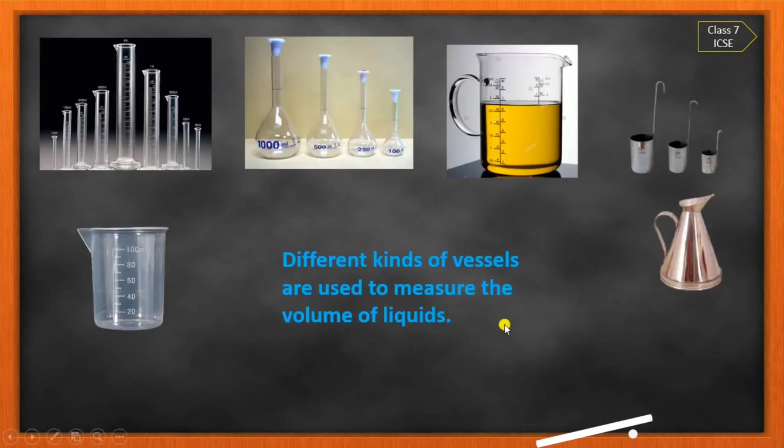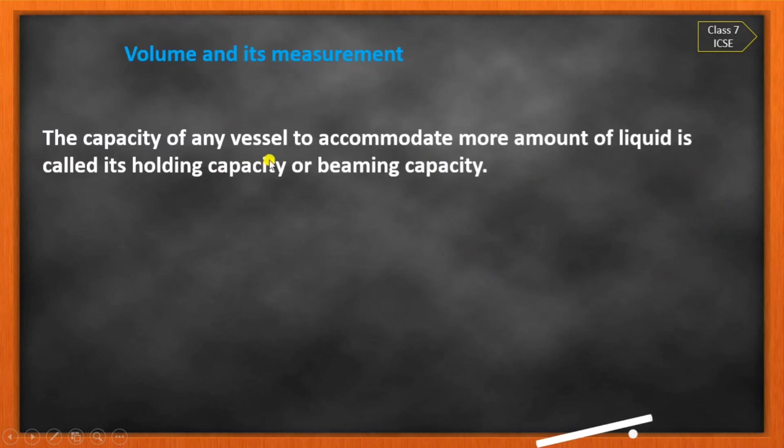You can see here different kinds of vessels are available to measure the volume of liquids. This is a beaker, measuring beaker, measuring cylinders, conical flask, all with different capacities. All are measuring vessels. The capacity of any vessel to accommodate more amount of liquid is called holding capacity or beaming capacity of that particular vessel.